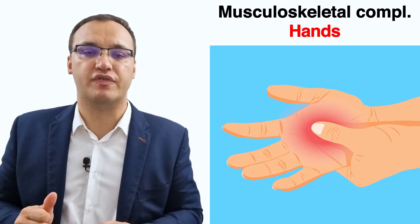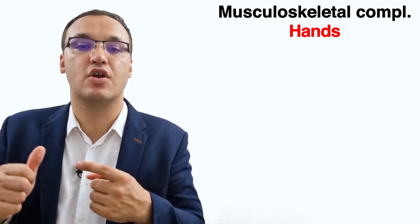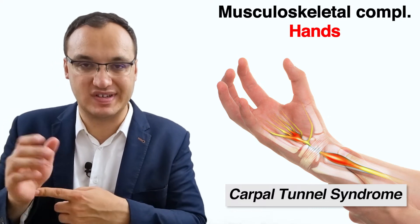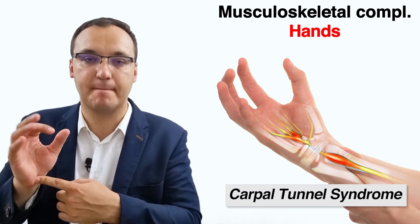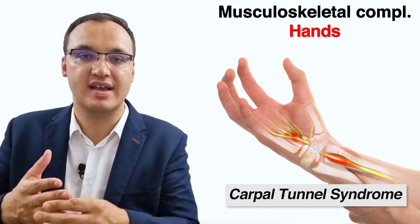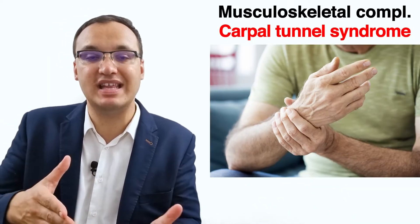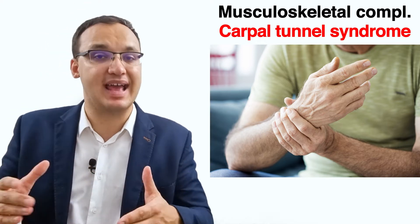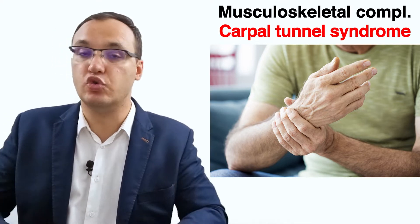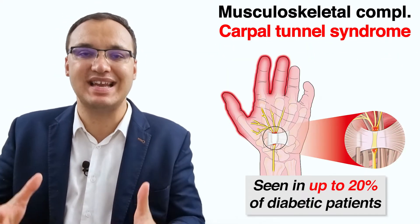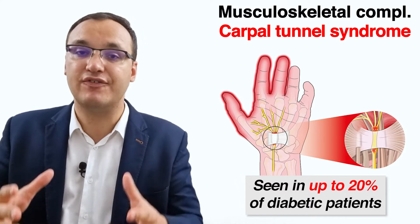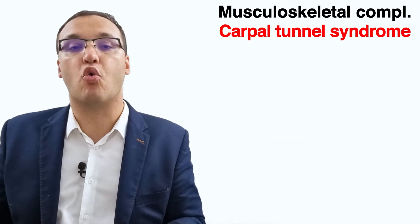The first common hand complication is carpal tunnel syndrome — a pressure on a nerve in your wrist that causes tingling, numbness, prickling, or burning sensation. This can be painful in your hand, fingers, and even your arms. The pain may even wake patients from sleep at night, and activities such as holding a newspaper, typing, or driving can make it worse. It is seen in up to 20% of diabetic patients, with higher risk in those with limited joint mobility or a long duration of diabetes.